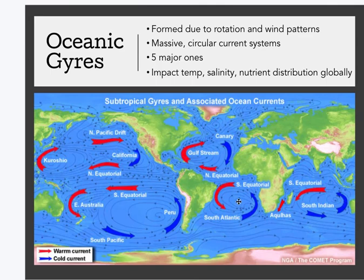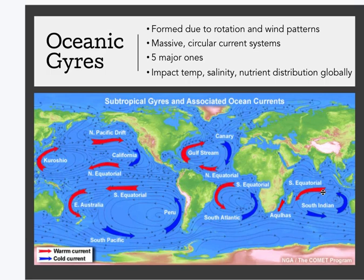The five major gyres are the North Pacific, South Pacific, North Atlantic, South Atlantic, and the Indian Ocean gyre. They're named after the hemisphere and ocean they're found in, except the Indian Ocean gyre because there's no Indian Ocean in the northern hemisphere. They are large, affecting temperature, salinity, and nutrient distribution worldwide. They also act as traps for ocean trash — the Great Pacific Garbage Patch is inside the North Pacific gyre. Pretty rough times.